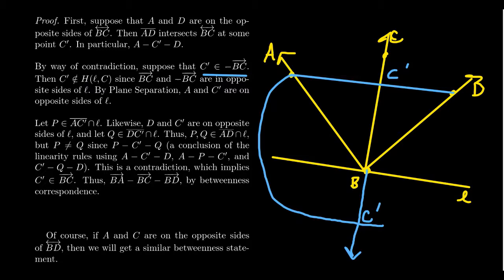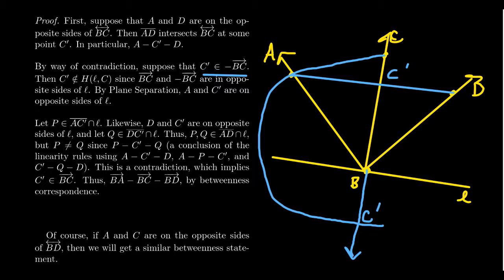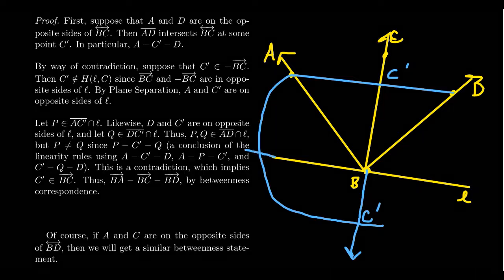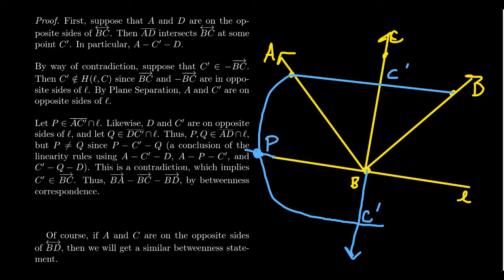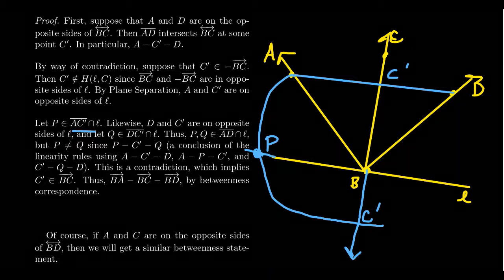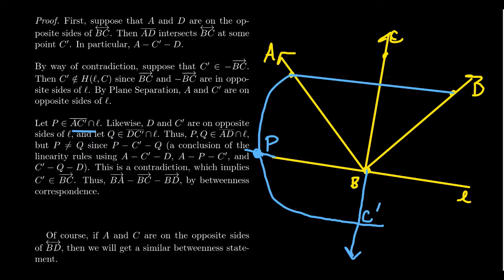Because the two rays are on opposite sides of line L, C and C' are on opposite sides. By plane separation, A and C' are on opposite sides of L: since A and C are on the same side of L by assumption, and C and C' are on opposite sides, then A and C' are on opposite sides, giving a point of intersection P between segment AC' and L. Similarly, D and C' are on opposite sides of L by similar reasoning, so segment C'D must intersect L at some point Q.